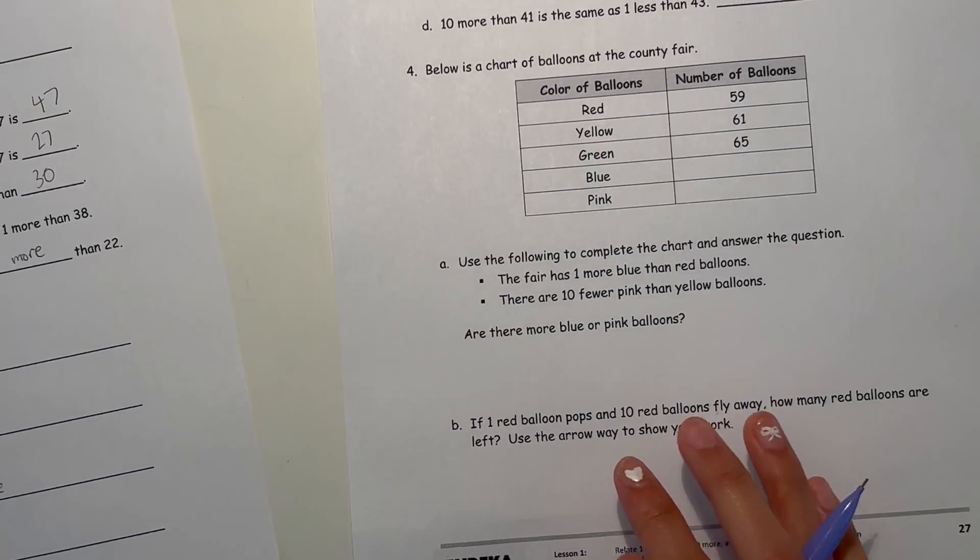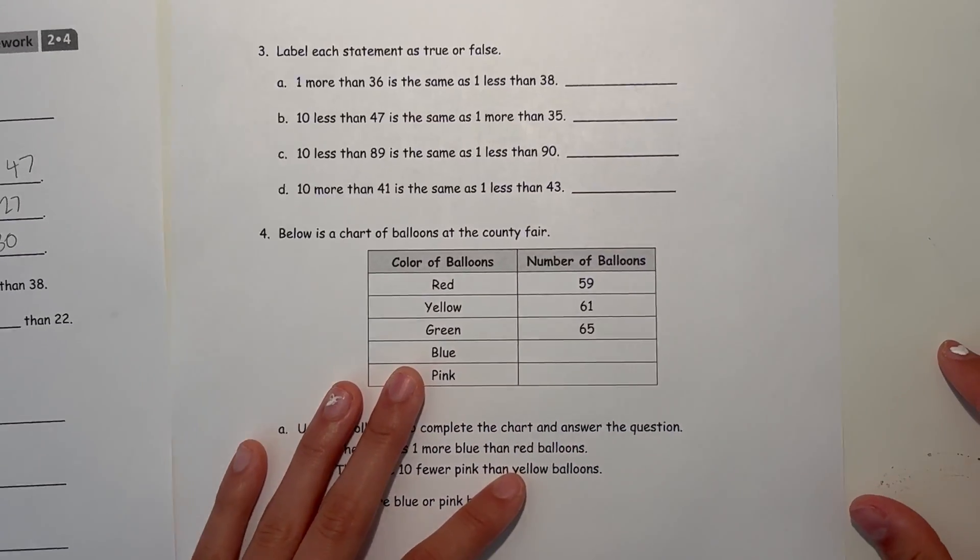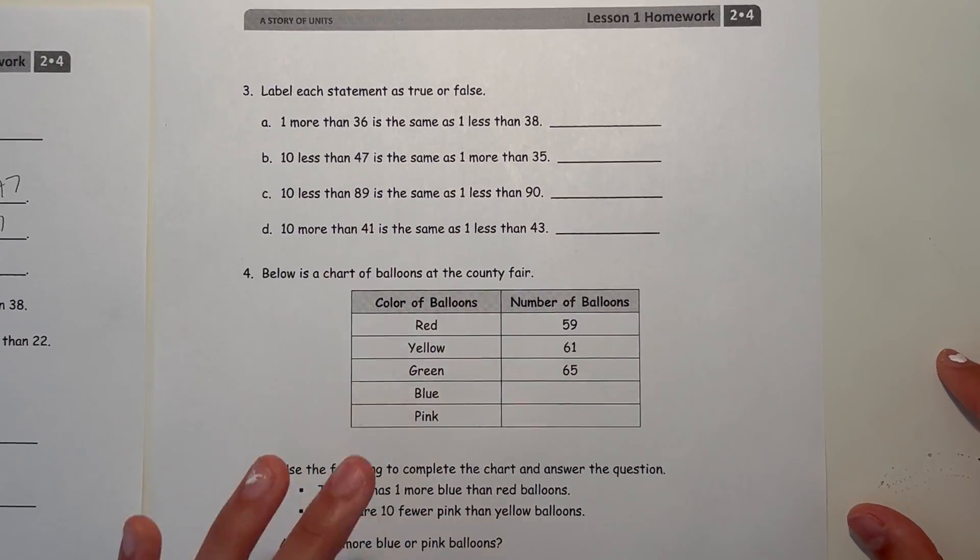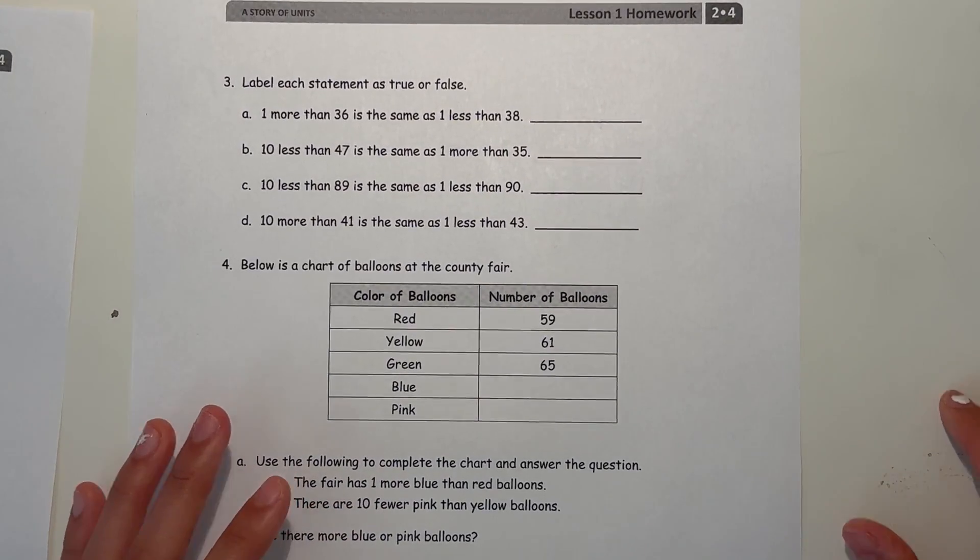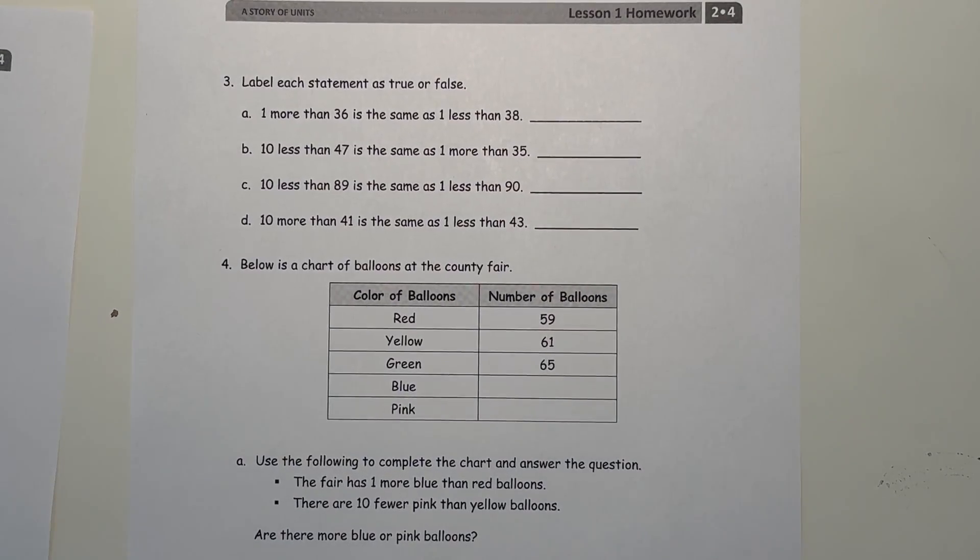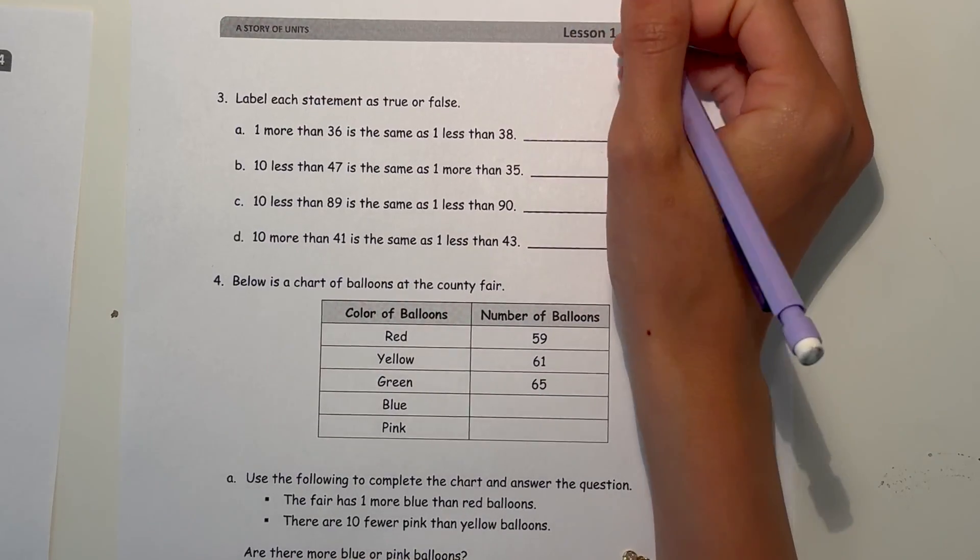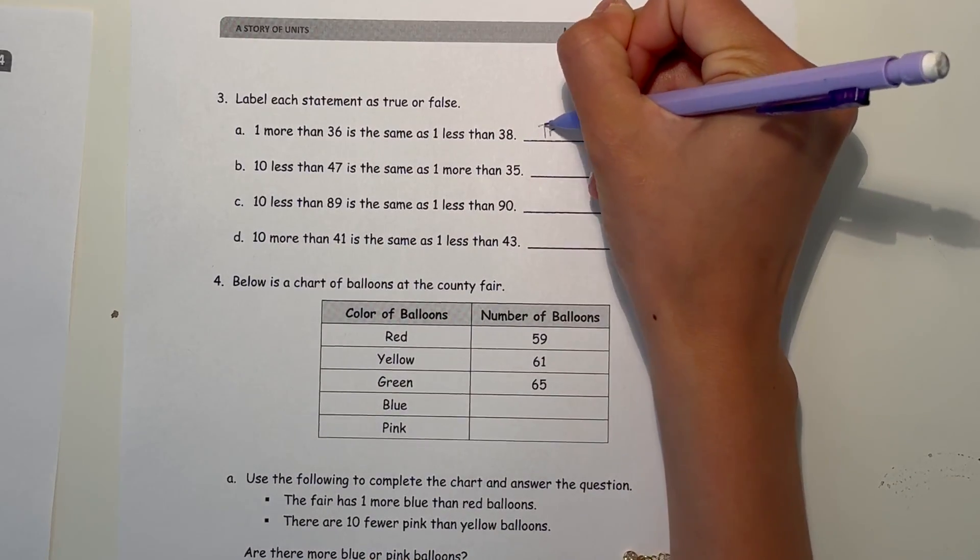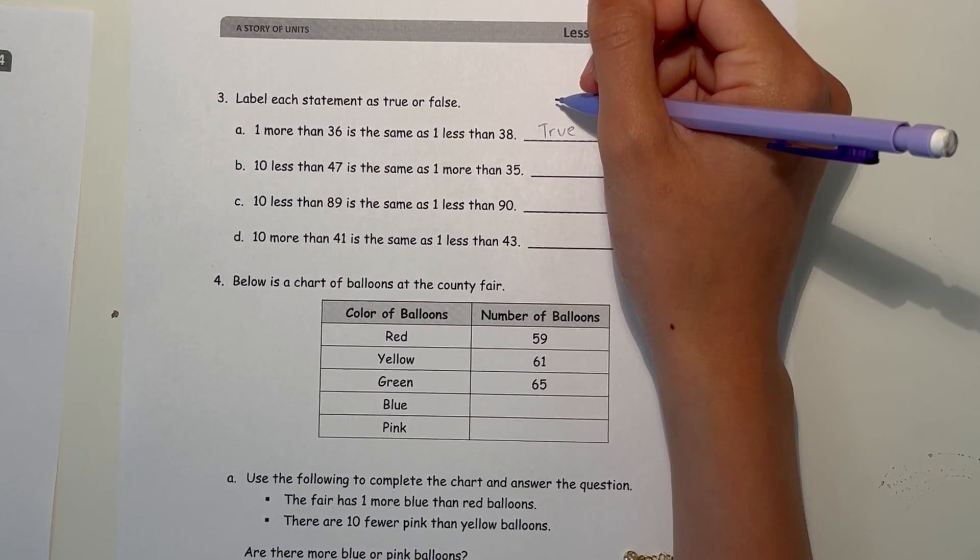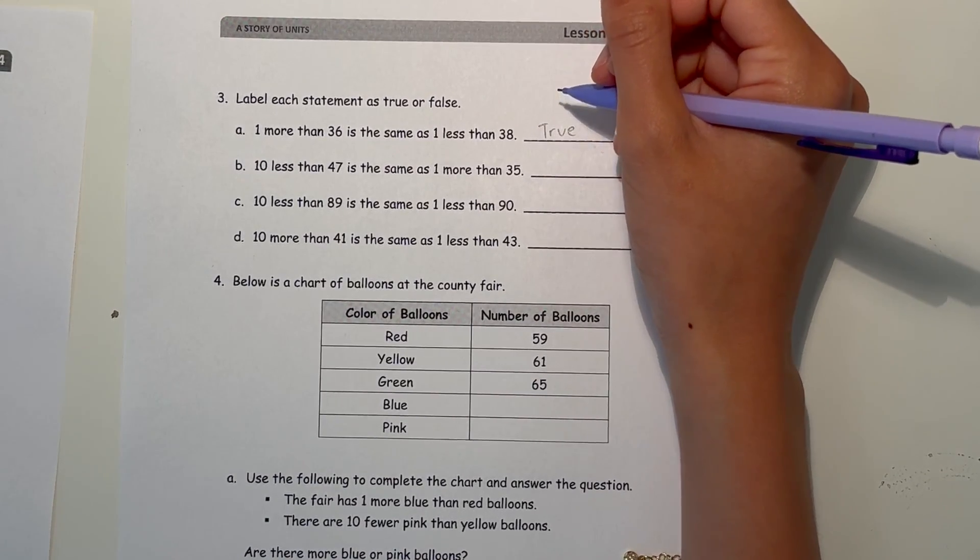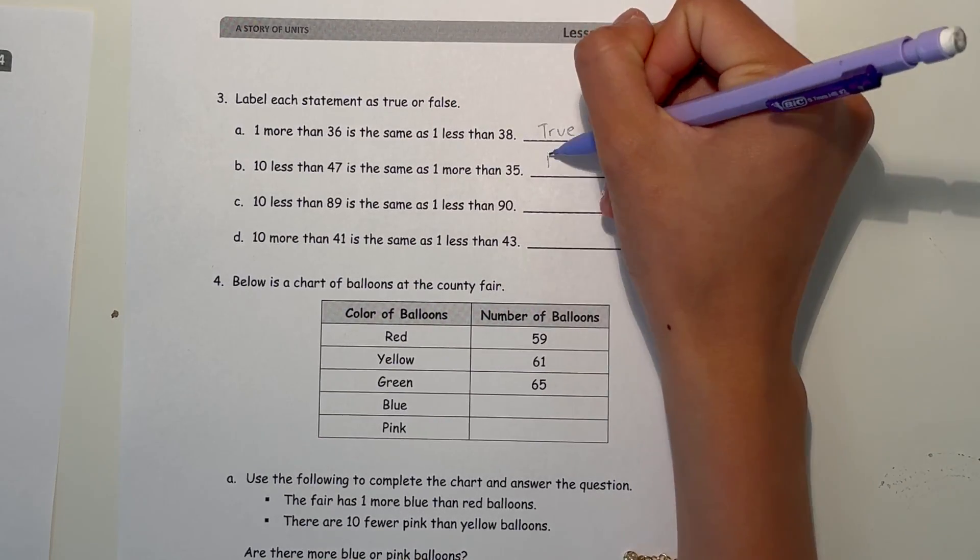So number 3, label each statement as true or false. A. 1 more than 36 is the same as 1 less than 38. Well, let's think about this. 1 more than 36 is 37. 1 less than 38 is also 37. So this is true. 10 less than 47 is the same as 1 more than 35. 10 less than 47 is 37, but 1 more than 35 is 36. So that's false.